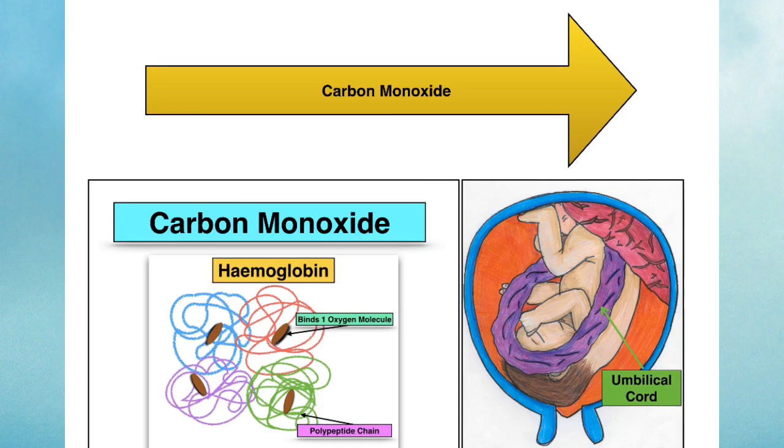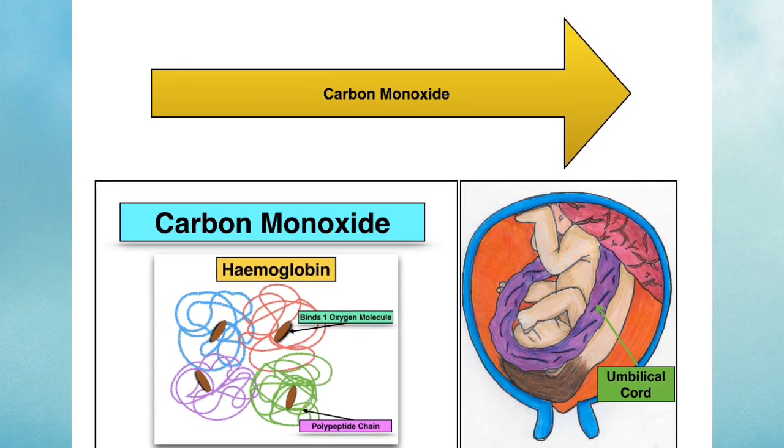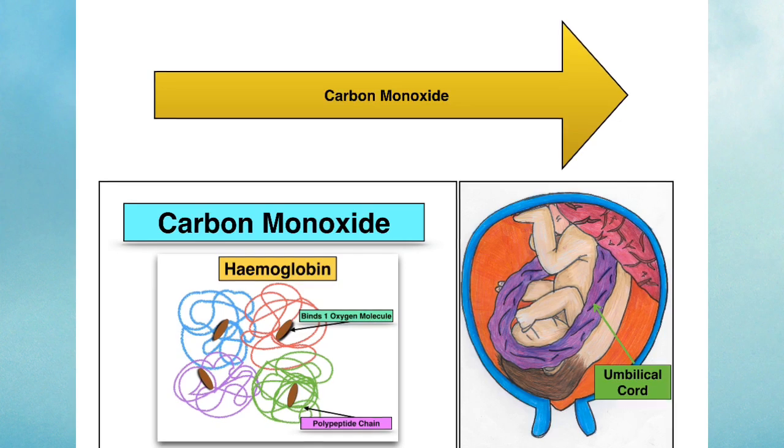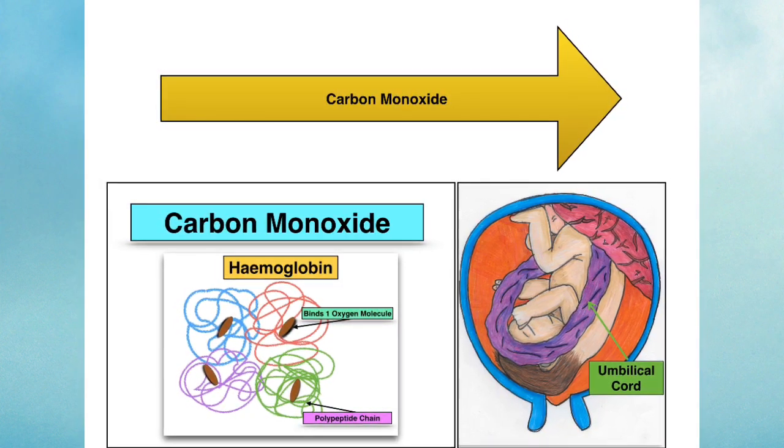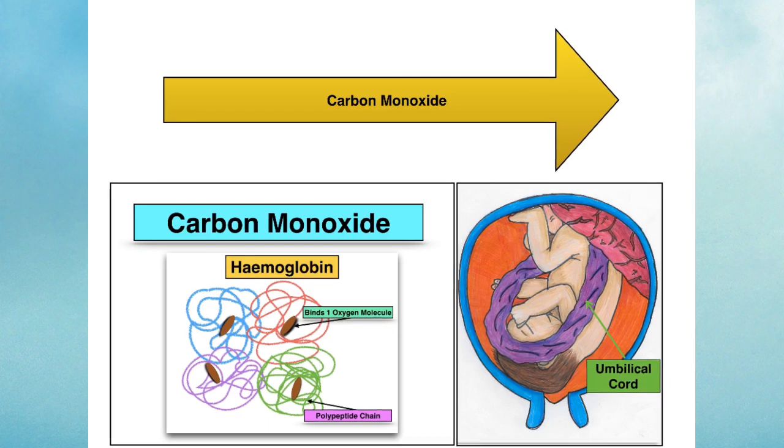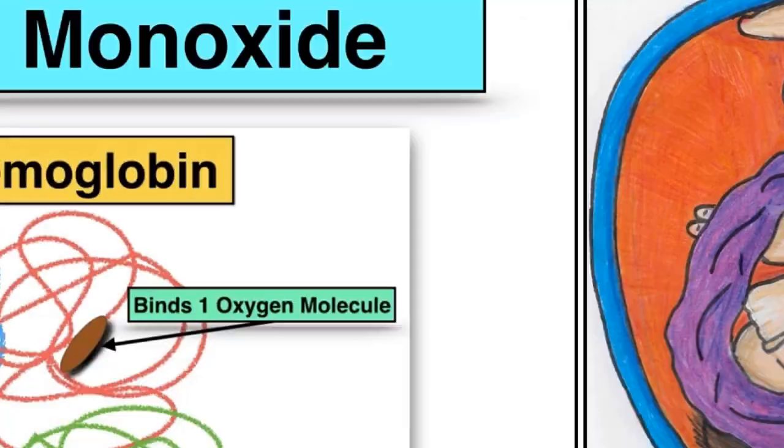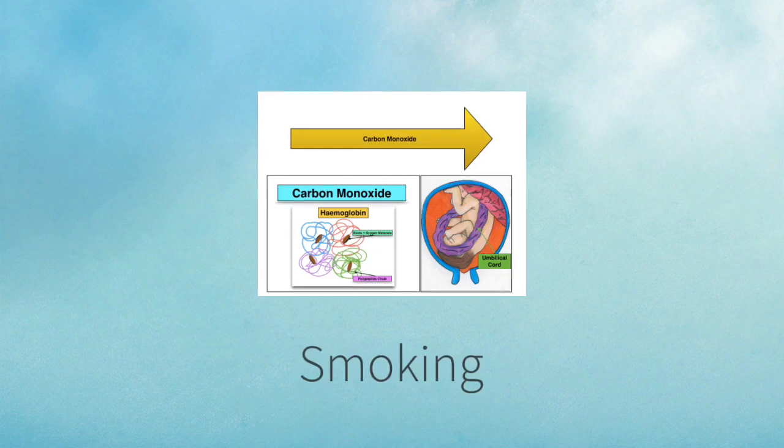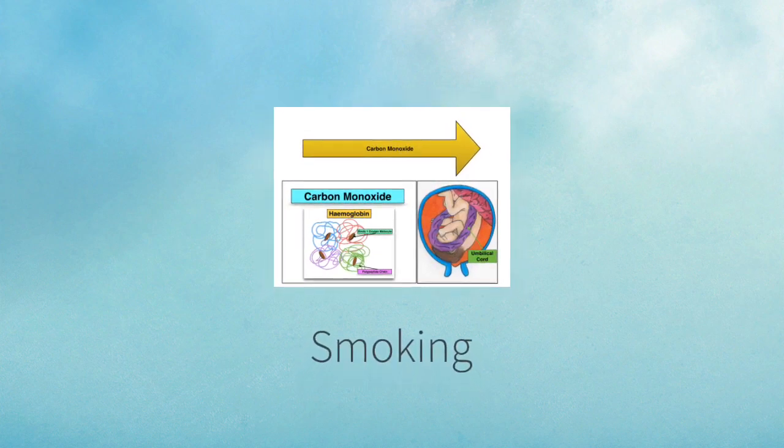It's also really important to know that haemoglobin has a great affinity for carbon monoxide, and if it's a choice between carbon monoxide and oxygen, carbon monoxide will win. When haemoglobin binds carbon monoxide, it greatly reduces the amount of oxygen that is transported by the red blood cells. This is one of the reasons why health professionals advise you not to smoke when pregnant. Cigarette smoke contains a lot of carbon monoxide.